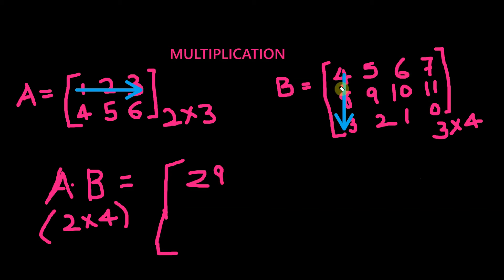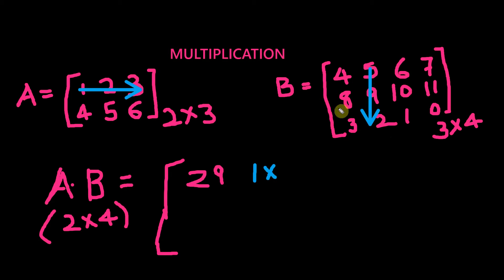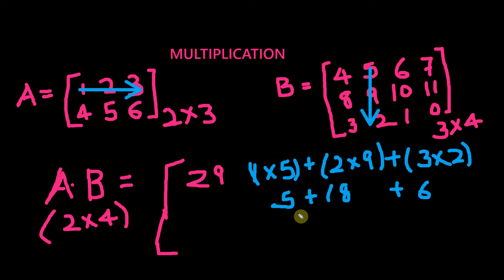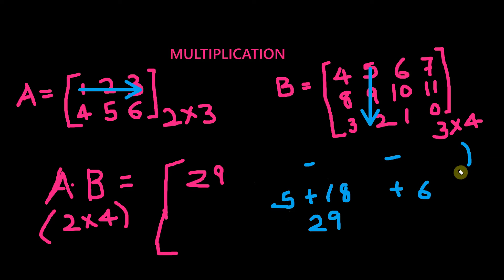Next, our task is to get the first row, second column value. We get that by multiplying the first row with the second column: 1, 2, 3 with 5, 9, 2. So 1×5 plus 2×9 plus 3×2 gives us 5 plus 18 plus 6. The total is 29. So the first row, second column value is 29.